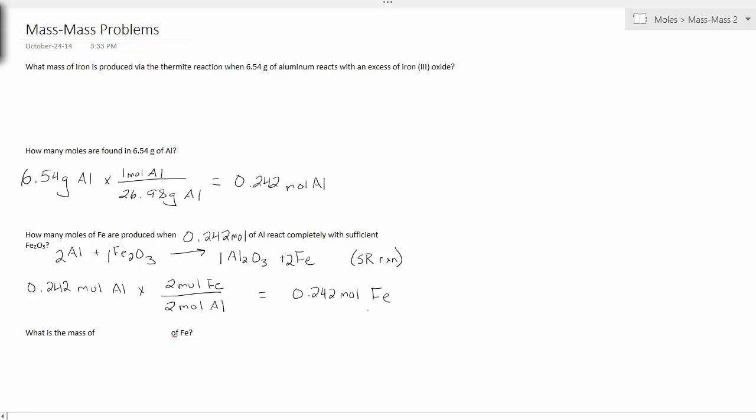At this point, now my question could be, what is the mass of 0.242 moles of iron? This is now a mole-mass conversion. 0.242 moles of iron. Convert this to grams of iron by multiplying by the molar mass. 55.85 grams of iron for one mole of iron.